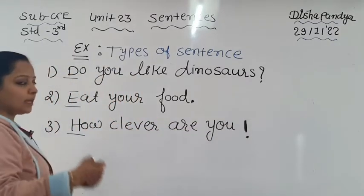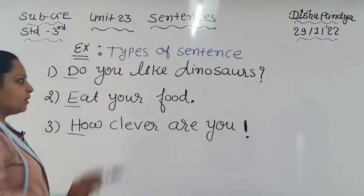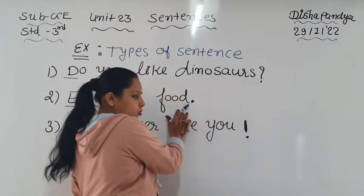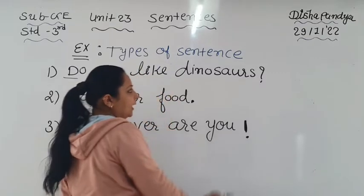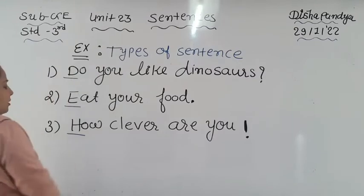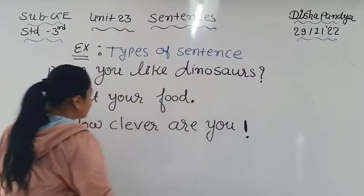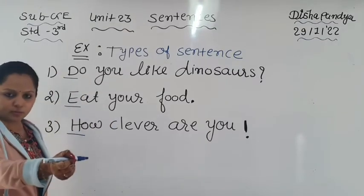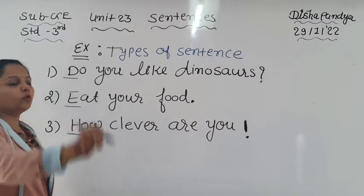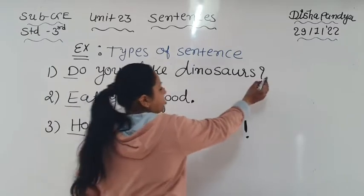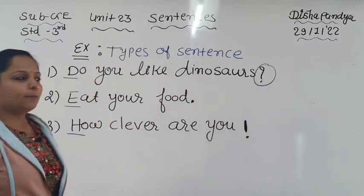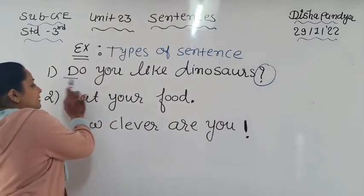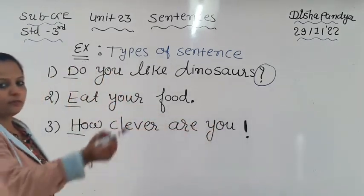Now we will learn about those marks in detail when we see the types of sentences. For now: this is a question mark, this is a full stop, and this is an exclamation mark. Sentence number one: 'Do you like dinosaurs?' - here a question is being asked, and a question mark is placed at the end. The first letter is capital - so this is a full sentence.